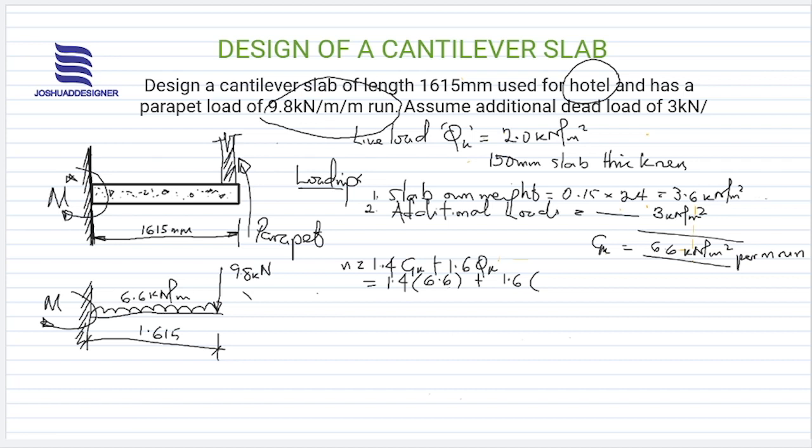Doing this, we'll have 12.44 kilonewtons per meter. So here, instead of 6.6, which is the dead load, we have 12.44 as we have rightly calculated. So we can now obtain our moment.